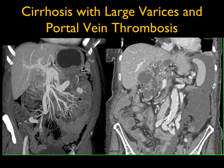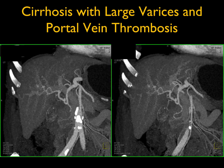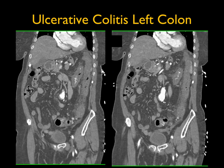Small aneurysms can be seen in patients with cirrhosis and can be a cause of spontaneous hepatic bleed.